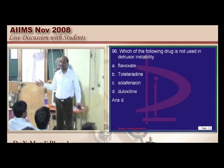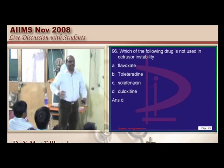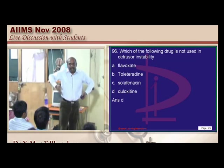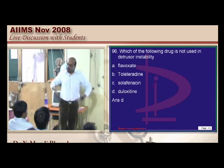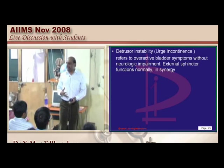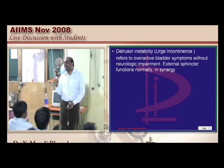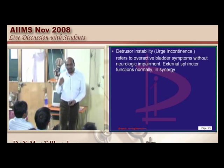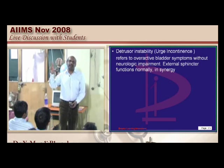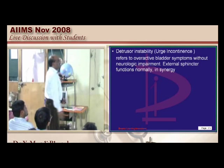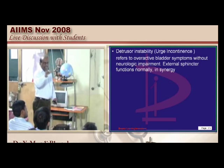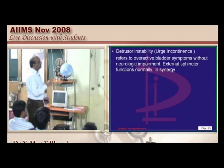Definitely. In urge incontinence, the detrusor is hyper-contracting, and that is creating an urge. Whereas in stress incontinence, we need to strengthen the sphincter to prevent the incontinence from happening. So the pathophysiology will differ for these two. Detrusor instability is basically urge incontinence.